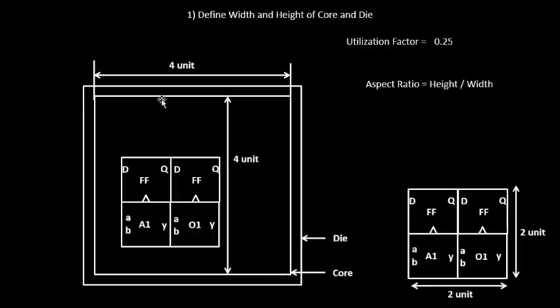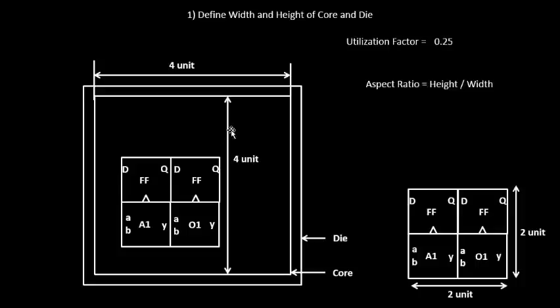So 4 square units divided by 16 square units gives 0.25 — meaning 25% of the chip area has been utilized. The remaining 75% is available for optimization and other things. So 25% of the core area has been utilized by the initial netlist, connected by ideal wires which don't have any shape or size.